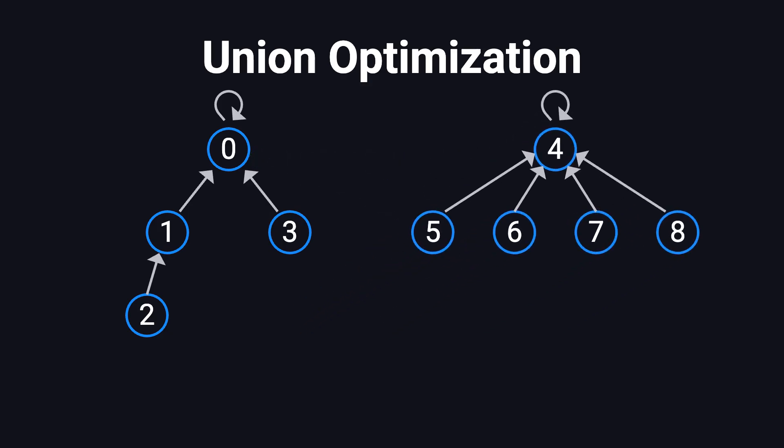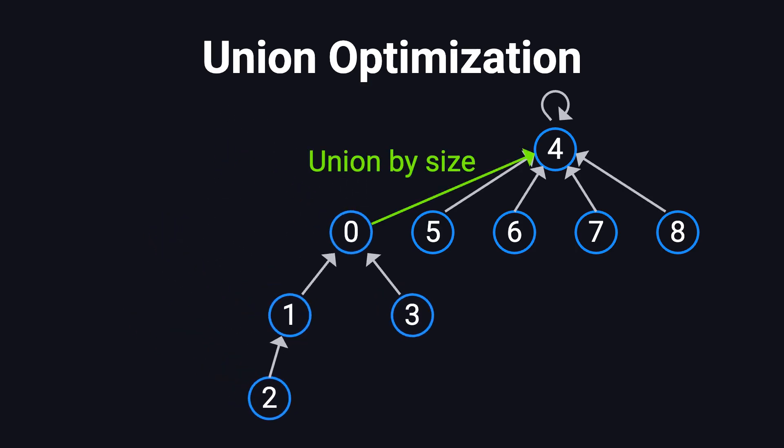On the other hand, if we're using union by size, and the tree rooted at 4 has 5 elements, while the one rooted at 0 only has 4, we do the opposite. We attach the smaller tree, rooted at 0, to the bigger one, rooted at 4. Either way, the goal is the same. Keep the trees flat, and keep find operations fast.